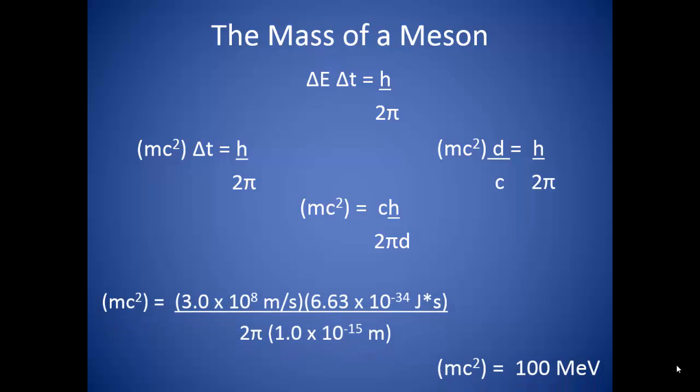From here, we can plug in the speed of light, Planck's constant, and the distance from the proton to the neutron, and we find that the rest mass energy of a meson is about 100 mega electron volts.